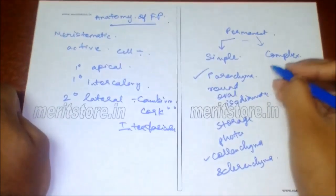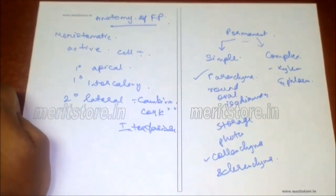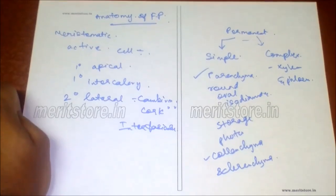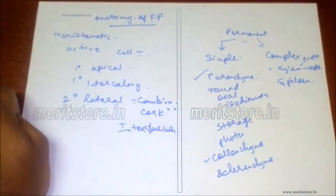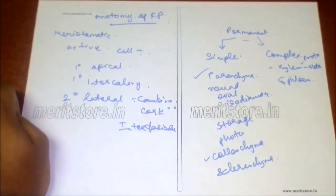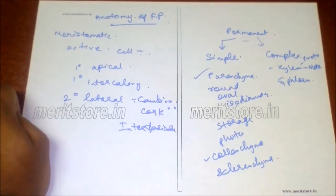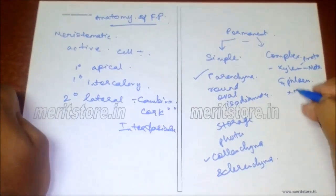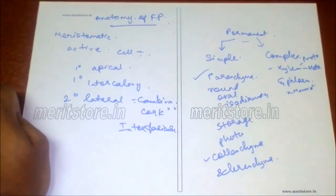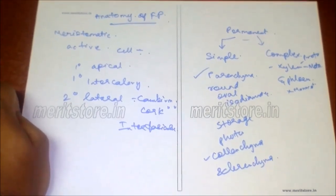Complex tissues consist of xylem and phloem. Xylem may be primary or secondary; primary xylem is of two types: protoxylem and metaxylem. Phloem is a living tissue that conducts food. In angiosperms, sieve tubes and companion cells are present (absent in gymnosperms). Sieve tube elements are non-nucleated cells; companion cells are spindle-shaped and maintain the pressure gradient. Phloem parenchyma is absent in most monocots. Protophloem has narrow sieve tubes; metaphloem has bigger sieve tubes.